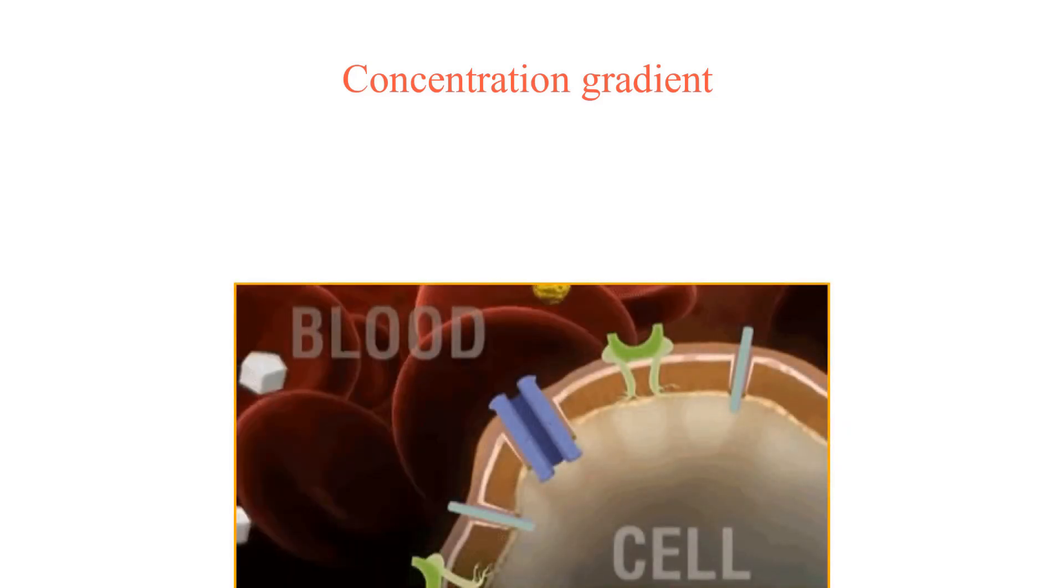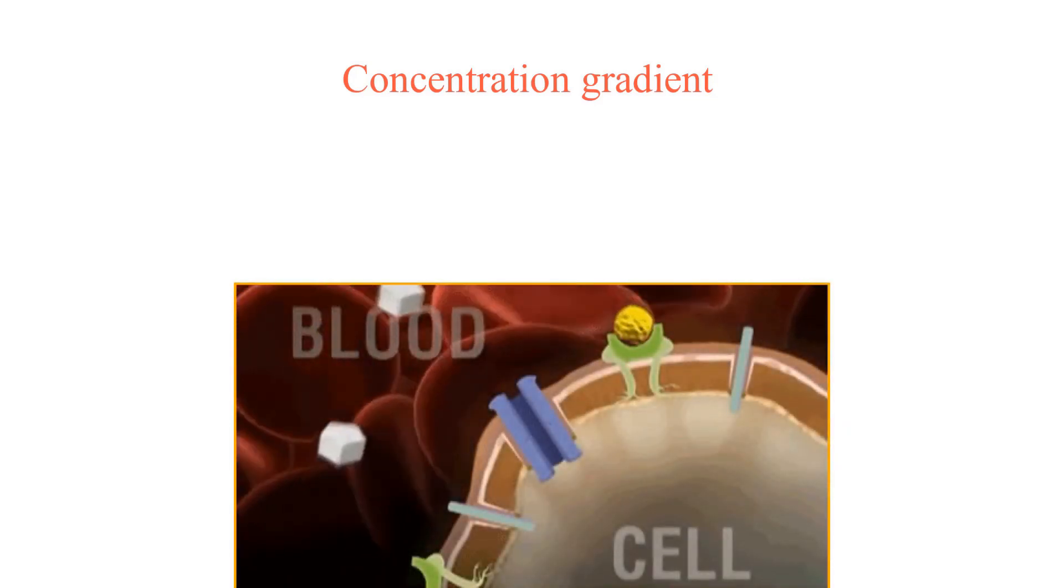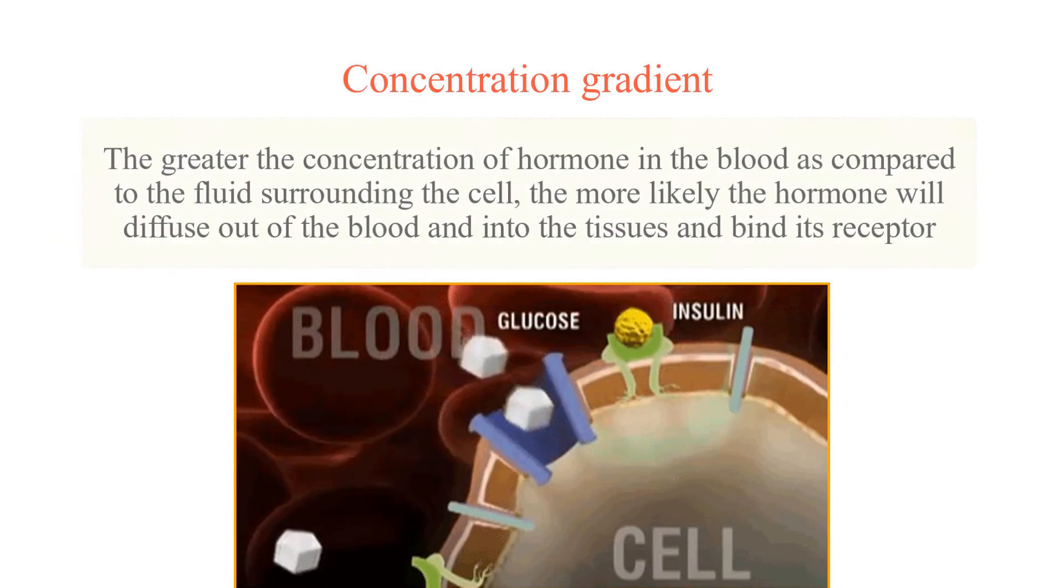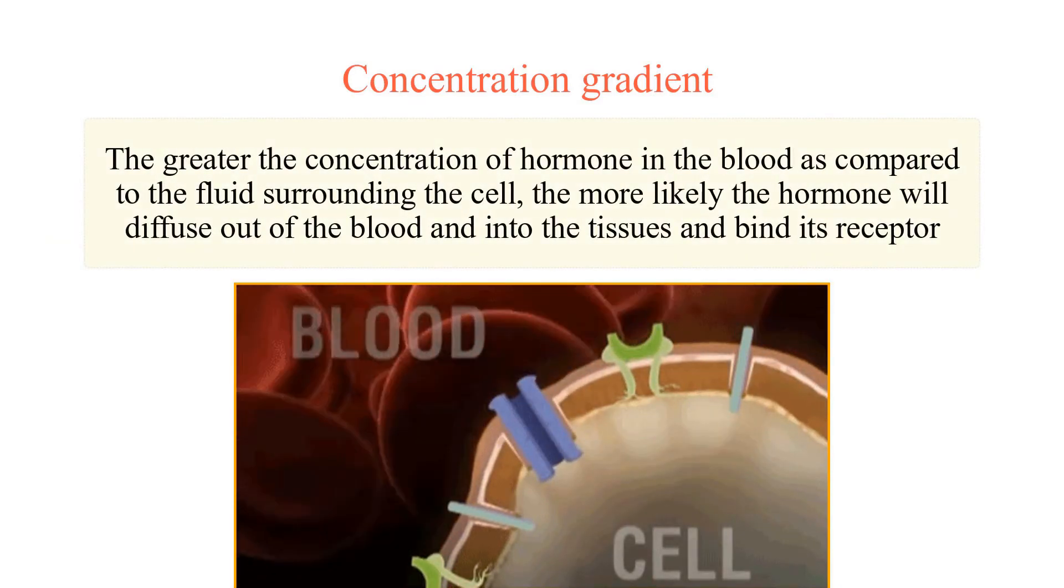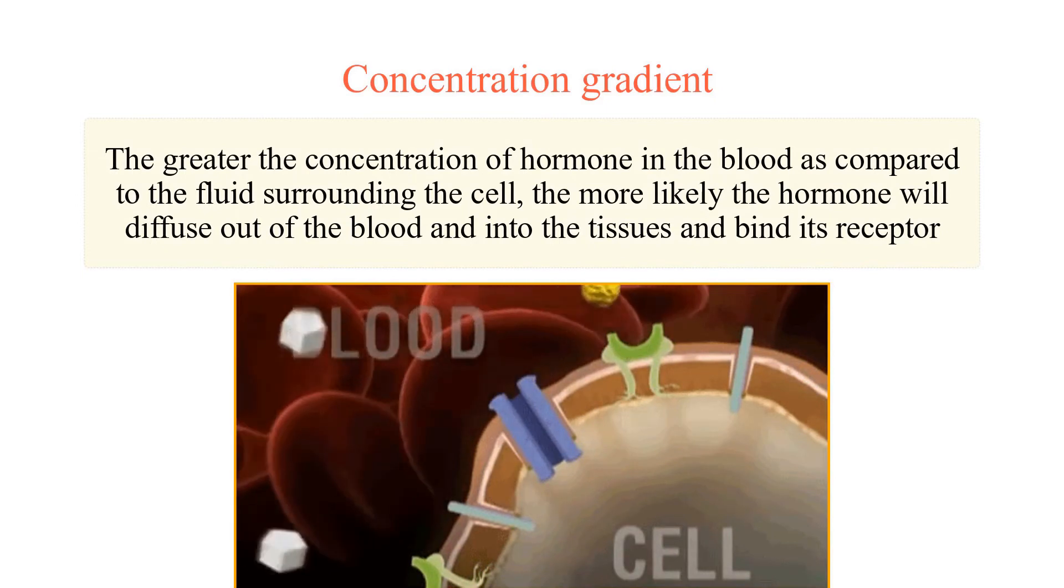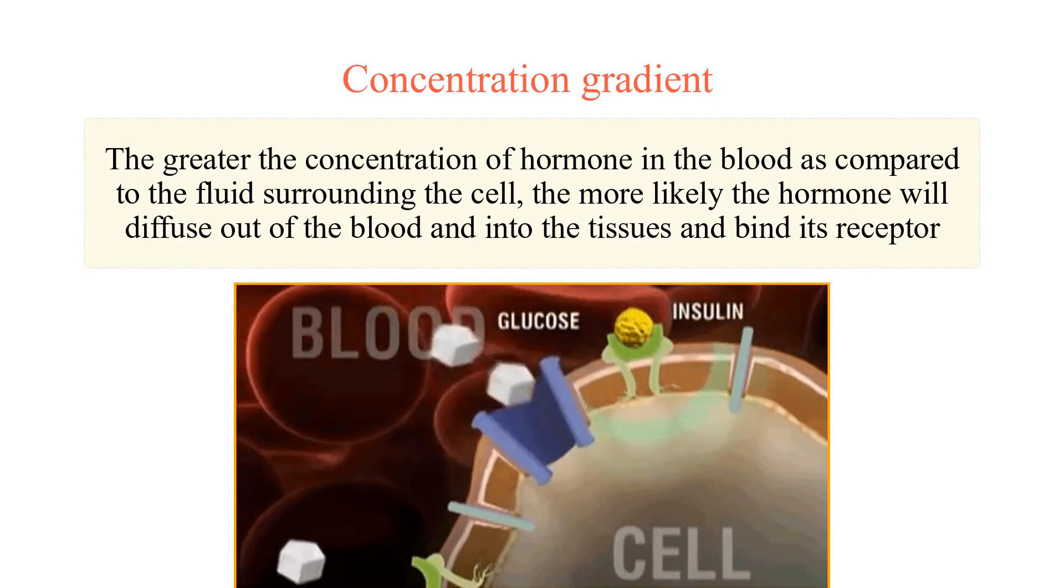For example, a hormone traveling in the blood must diffuse to the receptors of the hormone on the cell membrane. The greater the concentration of hormone in the blood as compared to the fluid surrounding the cell, the more likely the hormone will diffuse out of the blood and into the tissues and bind its receptor.